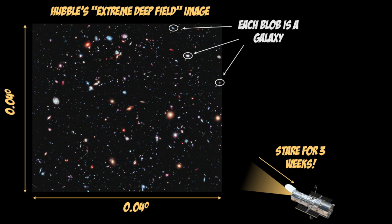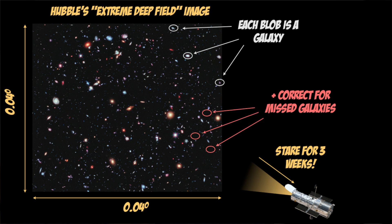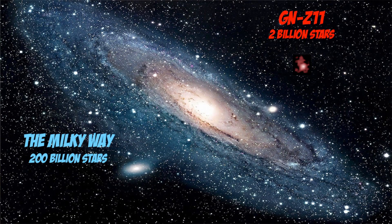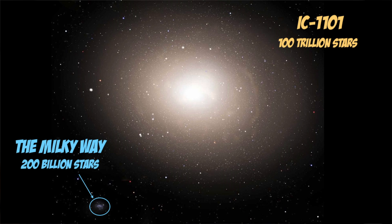So you'd stare at one patch of the sky for long enough to see even the most distant small galaxies, count up the total number, and then multiply by how many of those patches would fit in the entire sky. Someone has actually done that, and after accounting for missed galaxies due to telescope limitations, you end up with about two trillion galaxies in the observable universe. The problem is that galaxies, much like people, come in all sorts of different shapes and sizes — from small dwarf galaxies like GNZ11, which is the oldest galaxy ever photographed, up to monstrous ones like IC 1101, which contains some 100 trillion stars. So this simple multiplying idea is not going to work out.